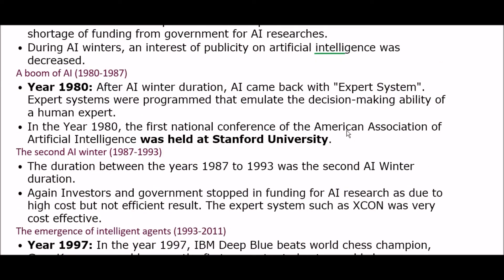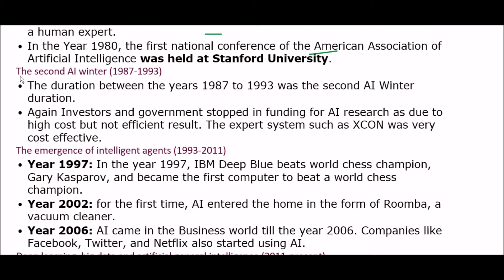The next phase is the boom of artificial intelligence, from 1980 to 1987. After the AI winter, AI came back with expert systems. Expert systems are programs that emulate the decision-making ability of a human expert. In 1980, the first national conference of the American Association of Artificial Intelligence was held at Stanford University.